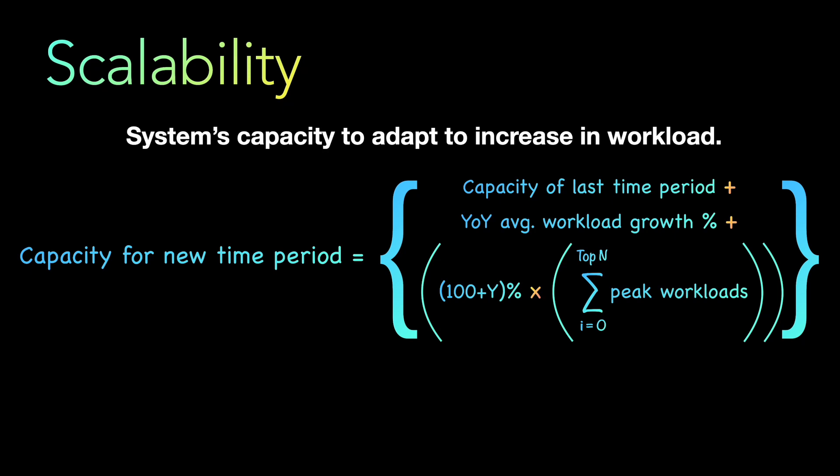In addition to average growth, you add (100 + Y)% of the top N peak workloads, where Y is a variable buffer — say 10%, 20%, or even 110% — depending on your business need. Your customers will have varying usage levels from low to high, and there will be peak times like holiday seasons or major events. Your system should be able to handle those peak workloads as well.